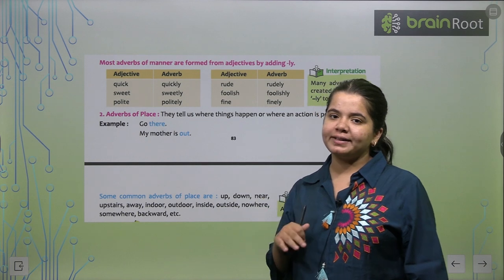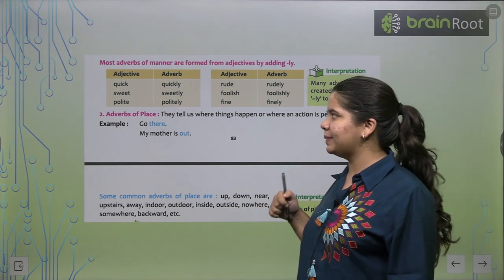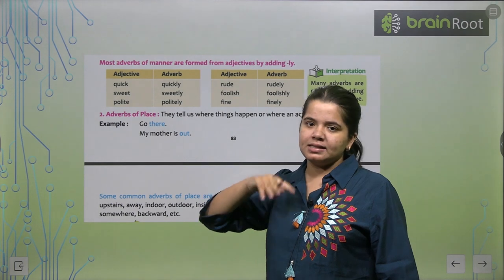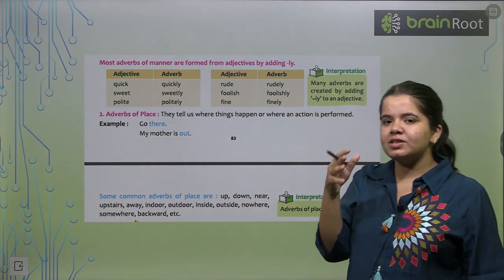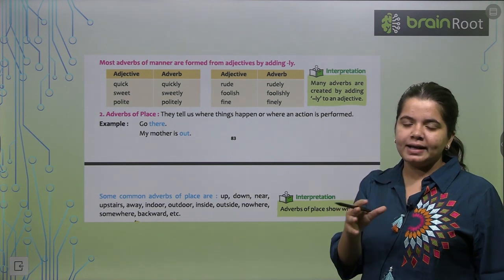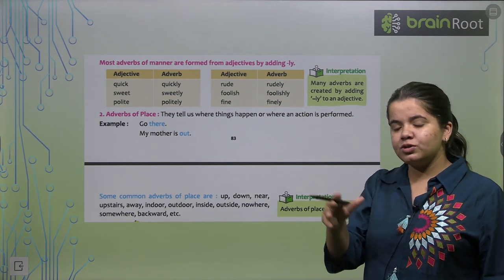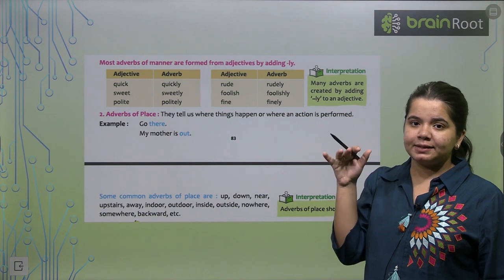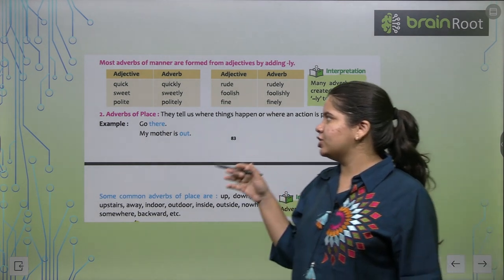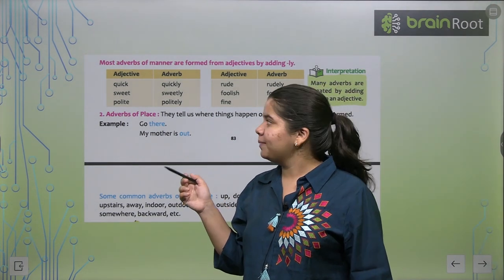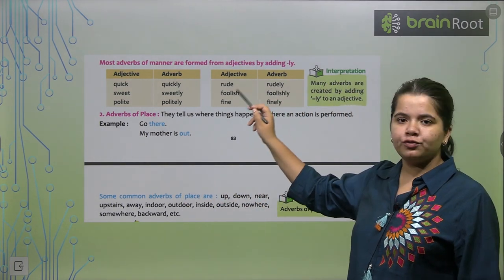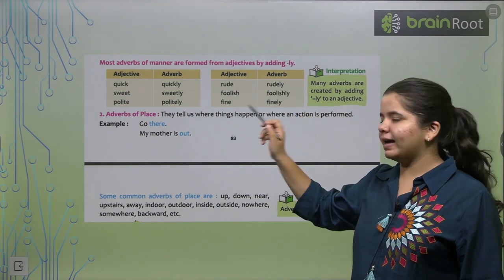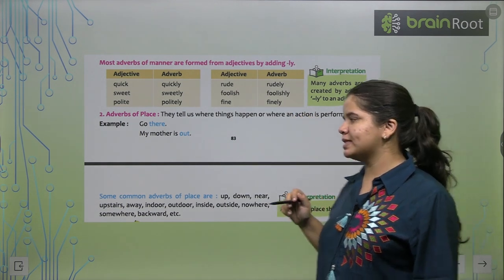So how can we make adjectives an adverb of manner? Look here on the table. Adjectives, to that when we emphasize about it then it is an adverb. Quick becomes quickly, sweet becomes sweetly, polite becomes politely, rude becomes rudely, foolish becomes foolishly, fine becomes finely. I hope it's clear.